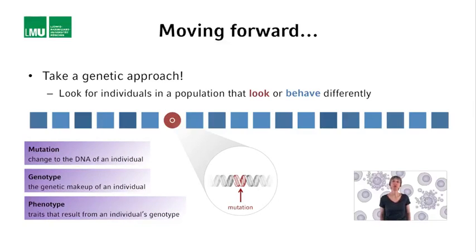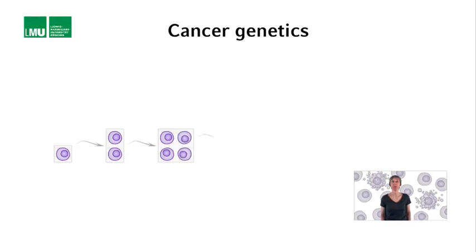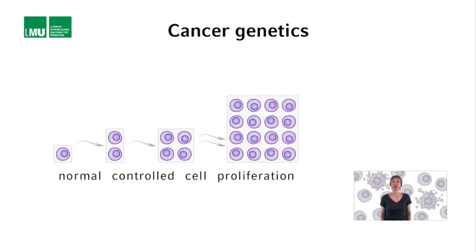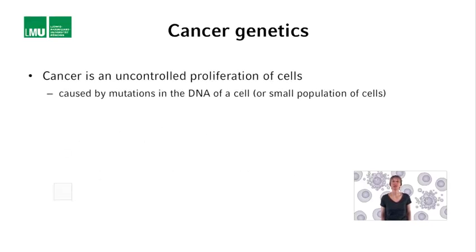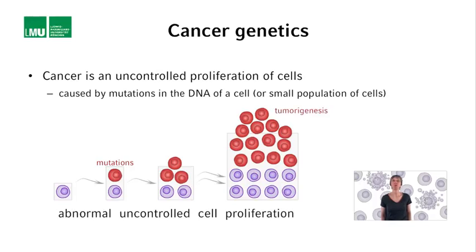Next week, for example, we will talk about genetic screens performed with the goal of finding mutant nematode worms with a defect in apoptosis. The first protein identified with a role in apoptosis was discovered through cancer genetics. Normally, cells proliferate in a controlled manner, but not so with cancer. Cancer is a genetic disease caused by changes in the DNA of a single cell or a small population of cells, which then proliferate in an uncontrolled manner and initiate tumorigenesis — the formation of a tumor.